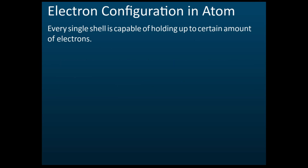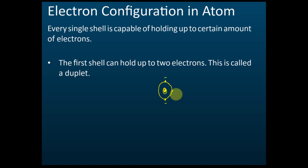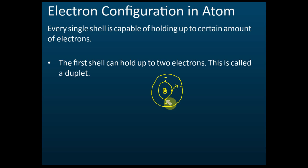For SPM, you just need to know the first three shells. The first shell can hold up to two electrons only, and we call this a duplet. Because electrons carry the same negative charge, they repel each other. If you insert a third electron, the repelling force becomes too high, so it gets pushed away to the next shell. Therefore, the first shell can only hold two electrons.